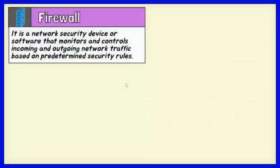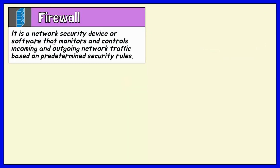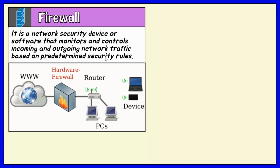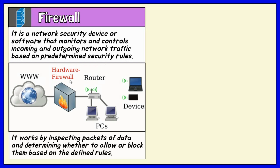A firewall is a network security device or software that monitors and controls incoming and outgoing network traffic based on predetermined security rules. The primary purpose of a firewall is to establish a barrier between a secure internal network and an untrusted external network such as the internet. Firewalls work by inspecting packets of data and determining whether to allow or block them based on the defined rules.